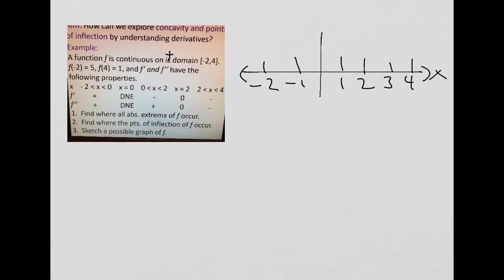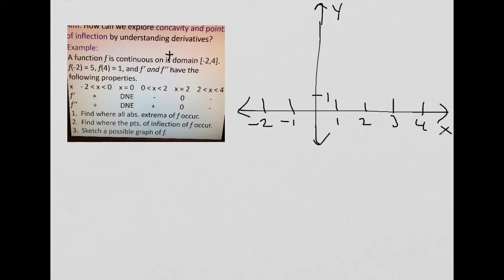And f of negative 2 is 5. I should kind of move this down. Let me see if I can do that. This is a lot better. So, negative 2 is 5. And 4, 1 is also a point. And it tells us that f prime and f double prime have the following properties.